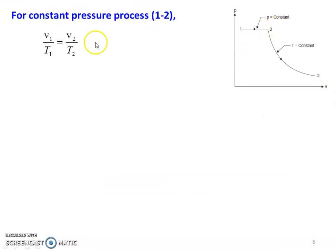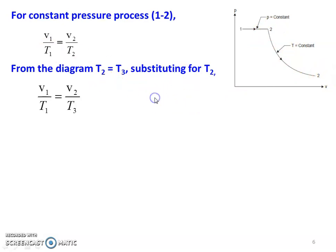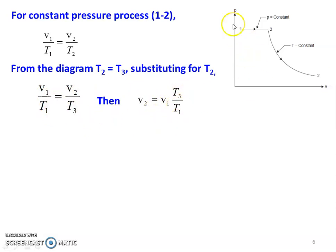For the constant pressure process 1 to 2, we have V1 by T1 equal to V2 by T2. From the diagram, T2 equal to T3 in the constant temperature process. Substituting for T2, V1 by T1 equals V2 by T2, giving V2 equal to V1 into T3 by T1.